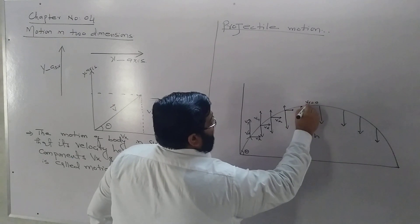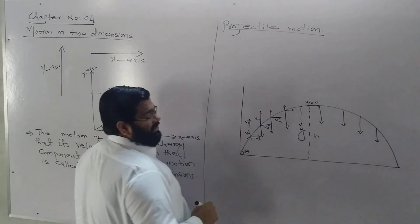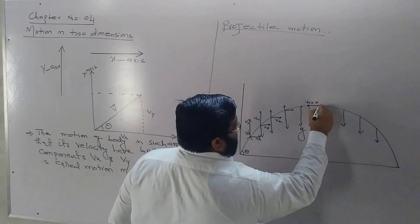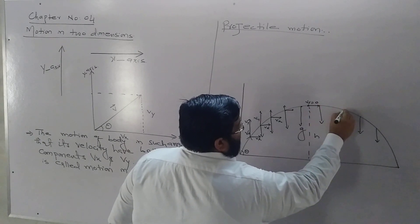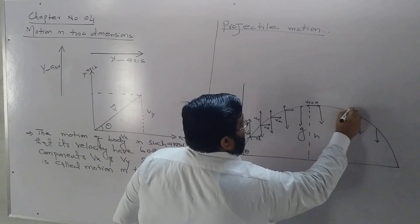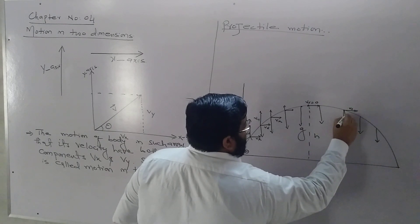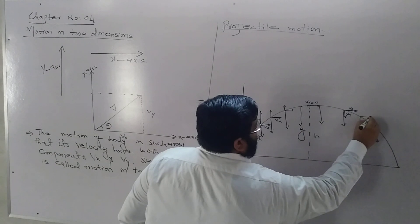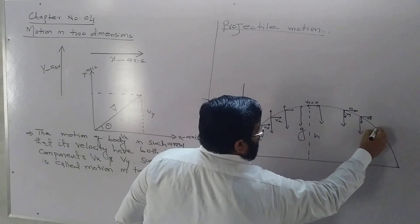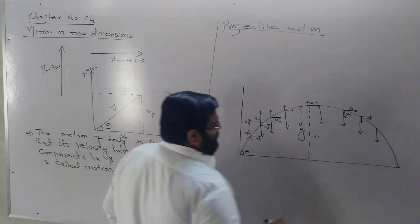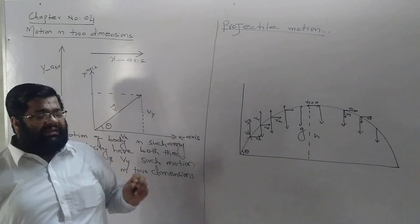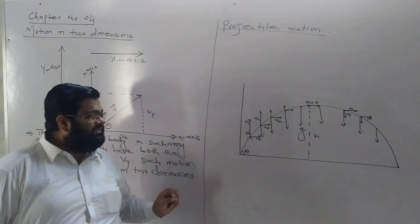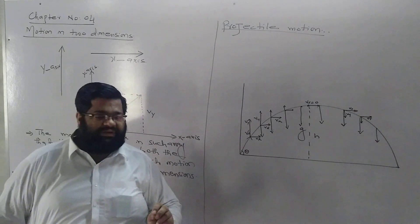In projectile motion, the x-component remains the same throughout the motion. The y-component changes. Simply, gravity affects the y-axis, and the x-axis is not affected by gravity.